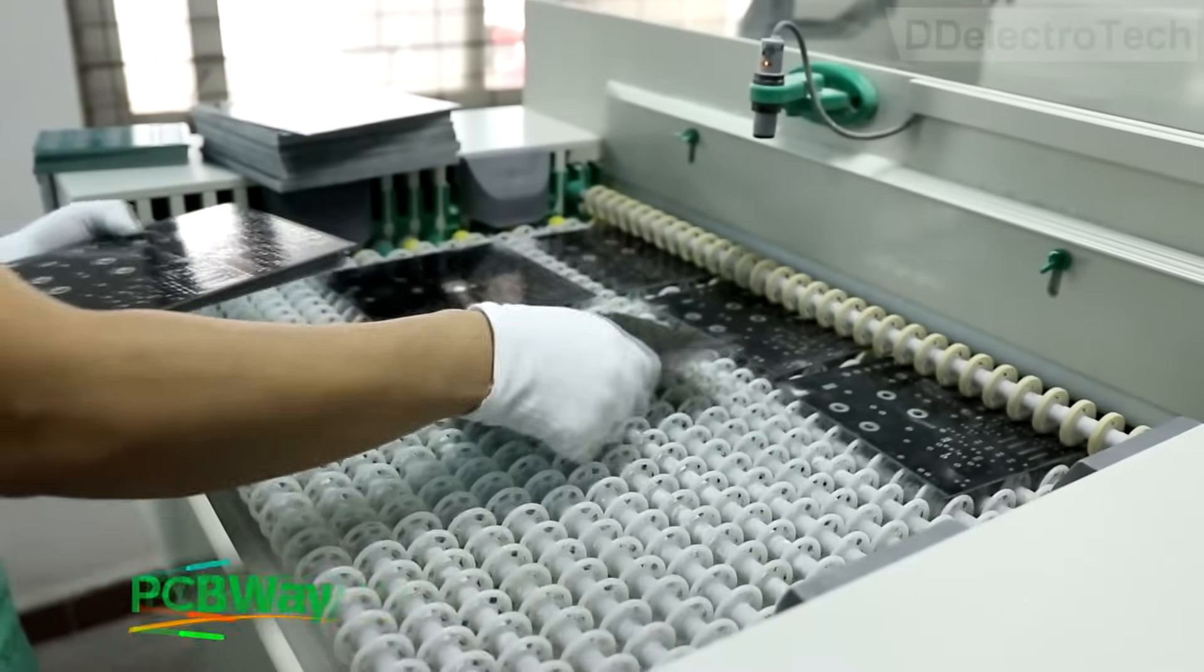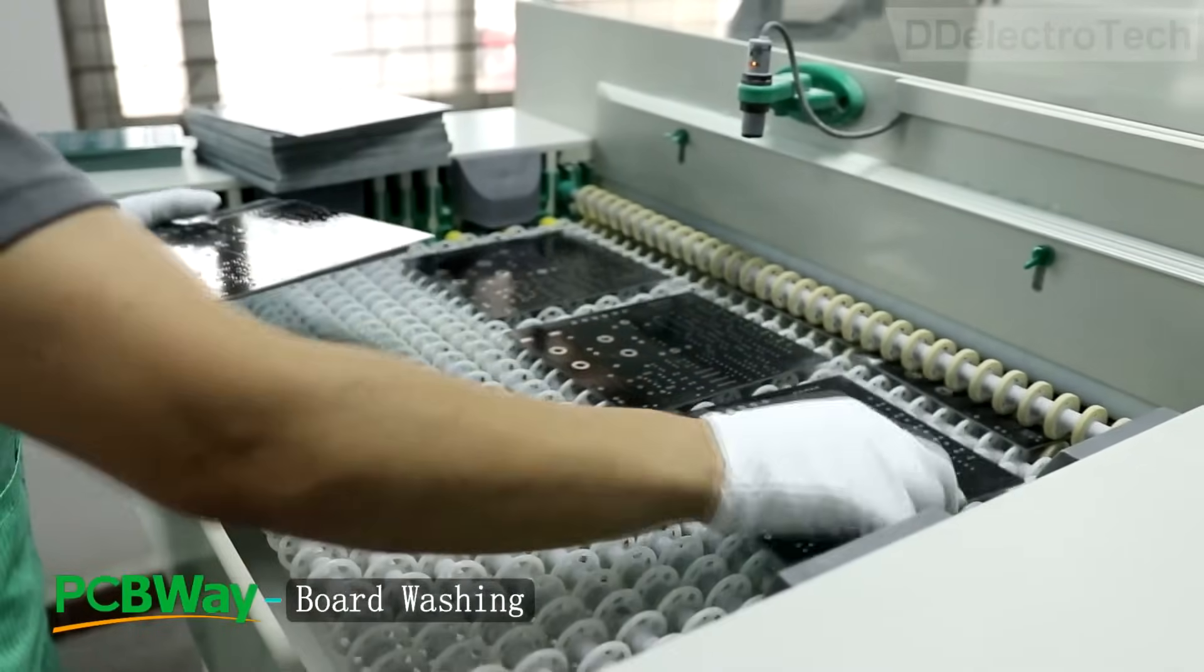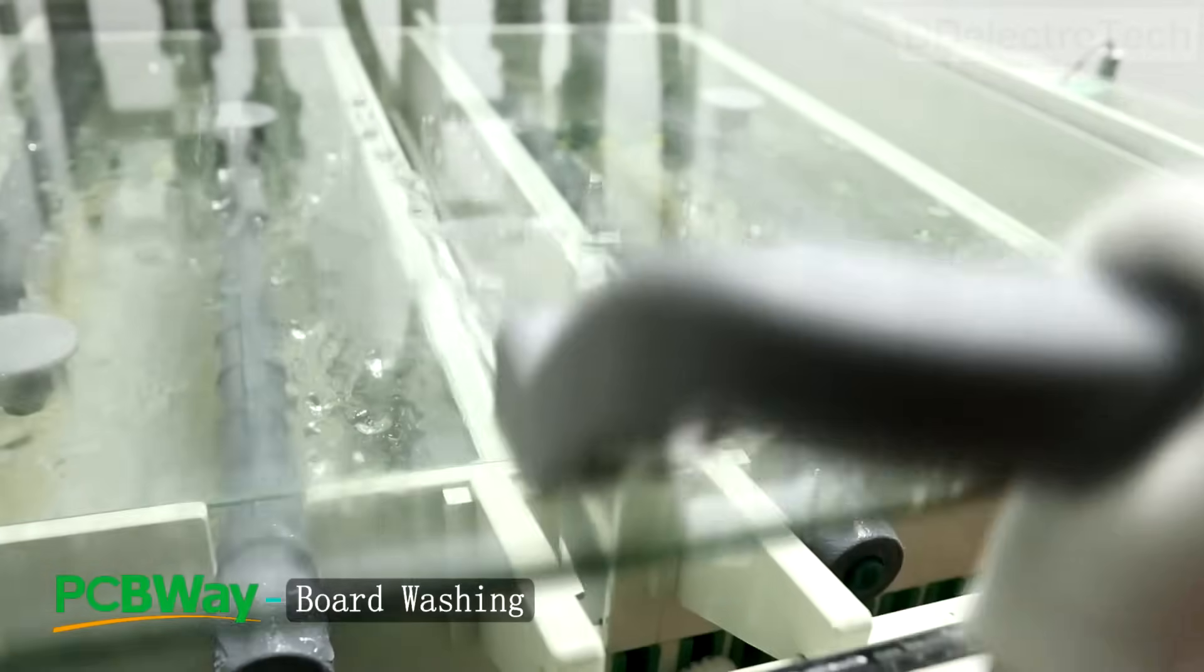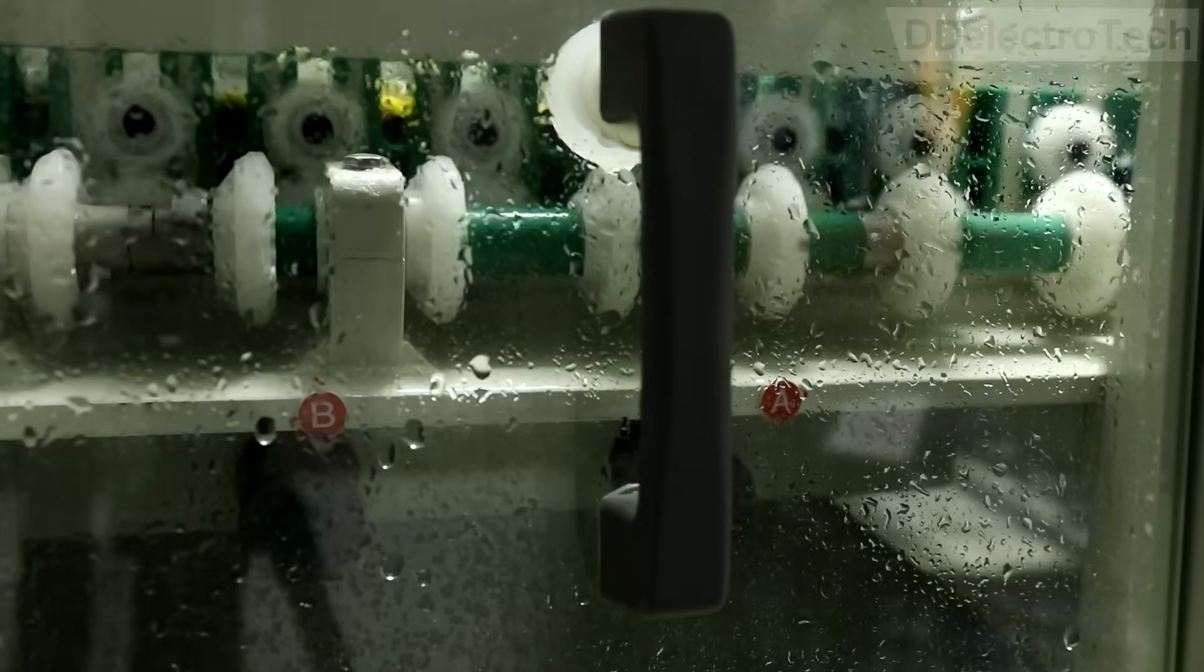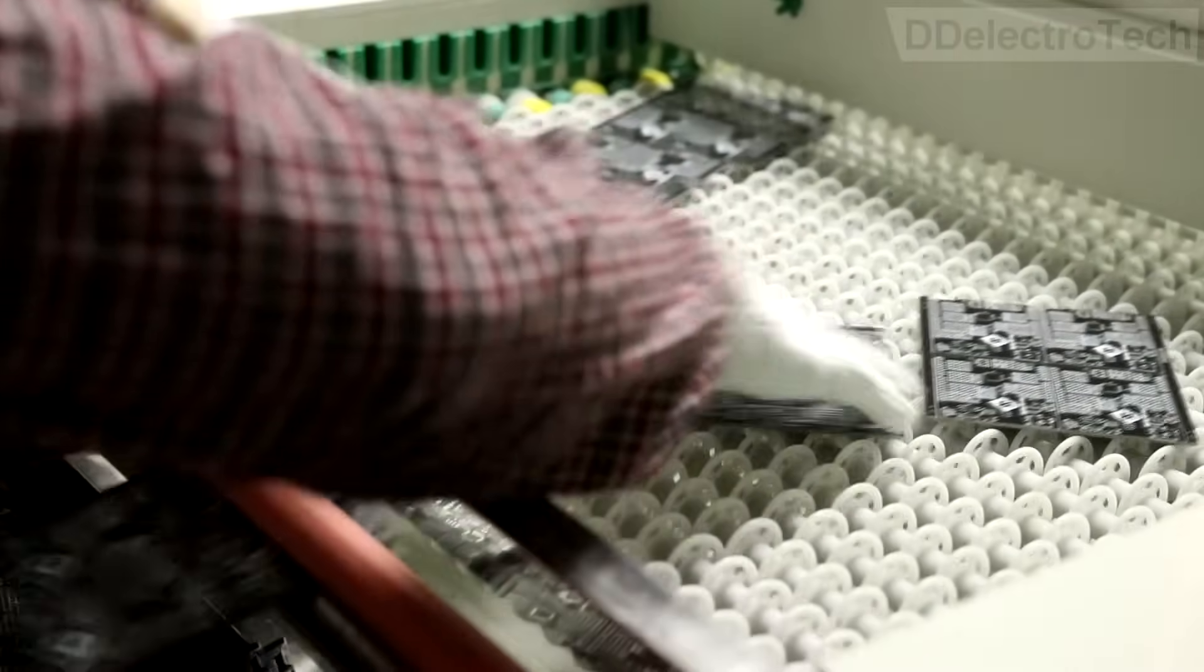After milling, the board comes for cleaning. This machine cleans dust and oil stains using ultrasonic waves. After wet cleaning, the boards are dried.